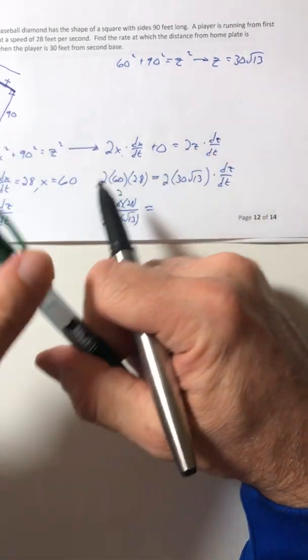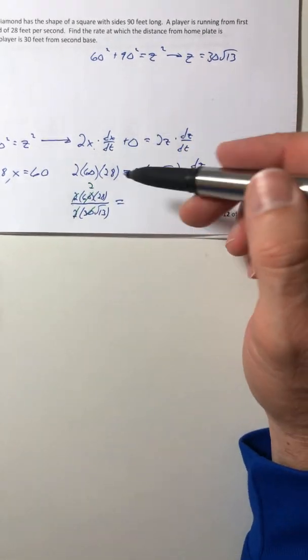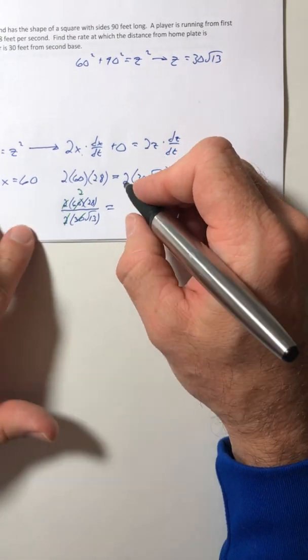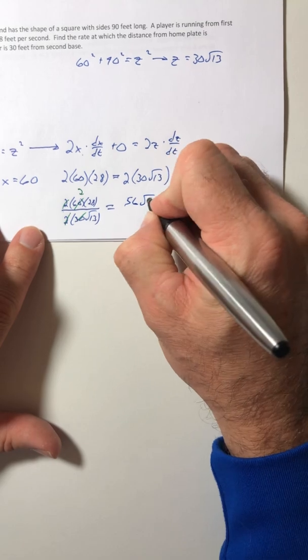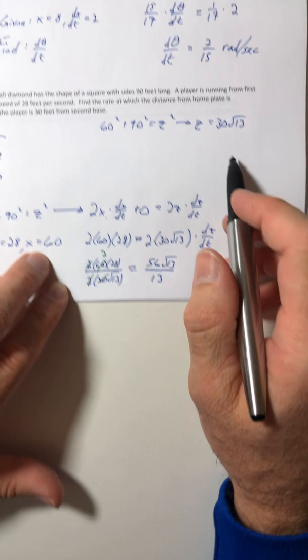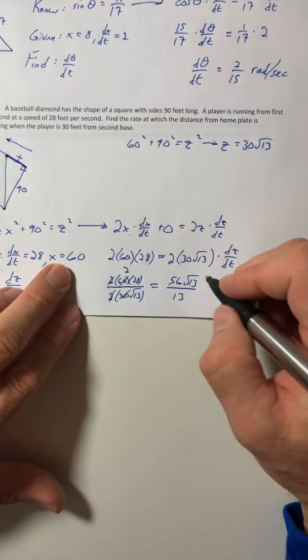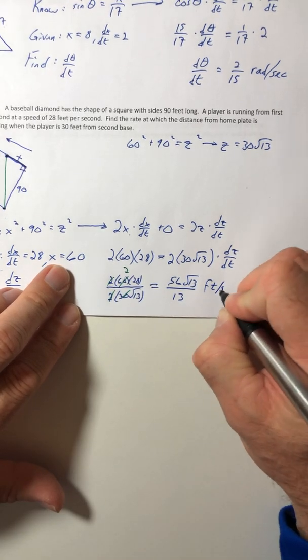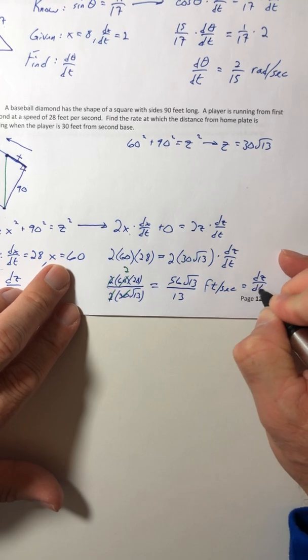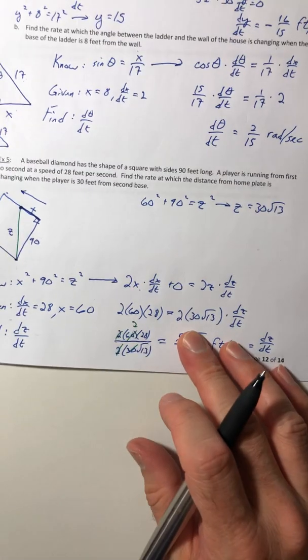And then if you rationalized it, and you do have to do that, only with numbers though. You don't need to rationalize with a variable unless you just really want to. If you rationalize it, that comes out to be 56 root 13 all over 13. And then the units, it's still a length, so it's still just feet per second. And that is your DZ DT.